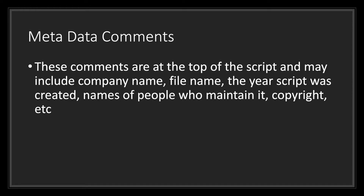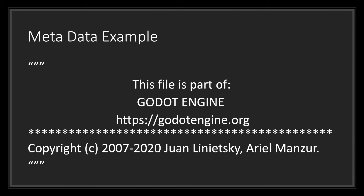Next we have metadata comments. These comments you will find most of the time at the top of the script and may include the company name, the file name, the year the script was created, the names of people who maintain it, copyright, and much more. For this example, I took a portion of the metadata comments you may find if you look at the Godot Engine on GitHub. You can notice we have the name of the Godot Engine, the website, a copyright, the year it was created, and who is maintaining it. You will usually find metadata comments in open source projects, typically written out in legal terms to indicate how you are free to use the project depending on its license.